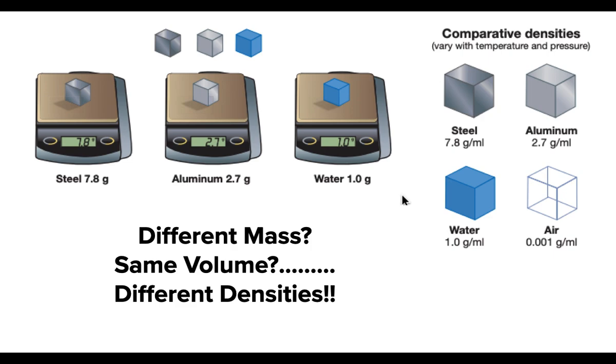So when you look at these cubes, we placed them on some balances, and I can see that the steel cube weighs 7.8 grams, the aluminum cube weighs 2.7 grams, and the water, a cube full of water, would weigh one gram. All of these things have a different mass, but they are the same volume. They then would have a different density. Mass per volume is the density. Steel has a density of 7.8 grams per milliliter. Aluminum, 2.7 grams per milliliter. The water, 1 gram per milliliter. Air, 0.001 grams per milliliter.